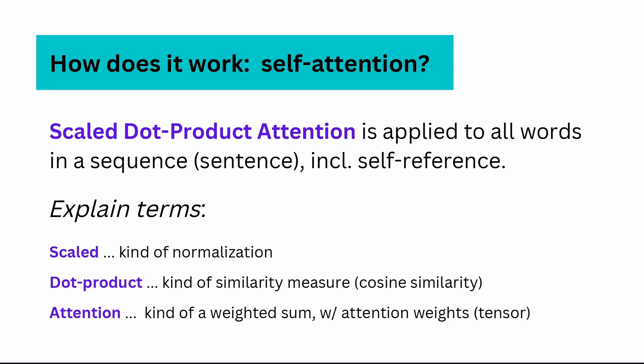If you look at the preprint, attention is all you need, you see that they specialize on a scaled dot product attention, which is applied to all the words in a sentence. It's not all words, but all tokens. And those tokens are taken care of. Let's have a look at this expression and explain some terms. What does scale mean? Scale is just a kind of normalization, just a factor.